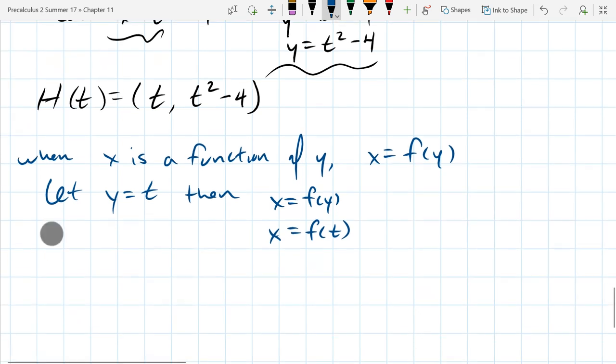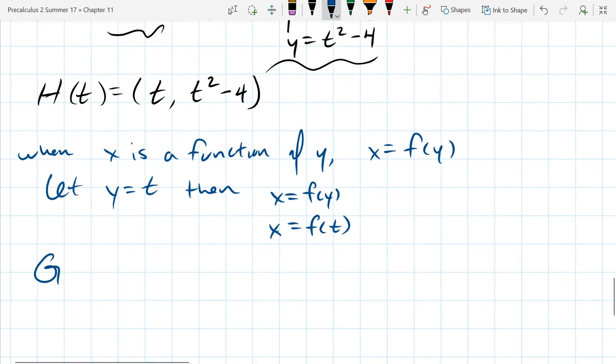So x is f of t, and then our final, I'll use capital G for our function here, our final answer will be, what is the x? The x is that little f of t, and what is y? y is just t.